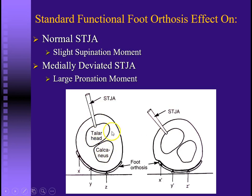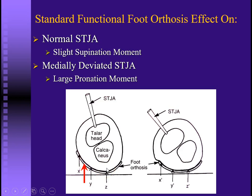In cross section, we see the talus head and calcaneus, representing the subtalar joint axis, with a foot orthosis underneath. Taking three random points — X, Y, and Z — on the left is a neutral foot, on the right is the more pronated foot. Point X is quite a bit medial to the subtalar joint axis, Y is also medial, and Z is somewhat lateral. The two medial points apply a supinatory torque, and though the lateral portion applies a pronatory torque, the resultant force is medial to the axis, so the orthosis overall applies a supinatory torque and helps stop excessive pronation.